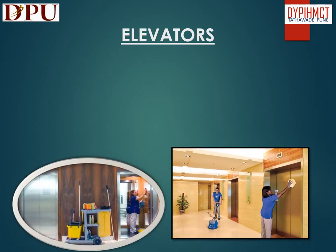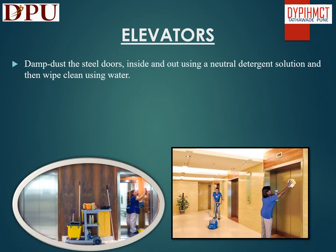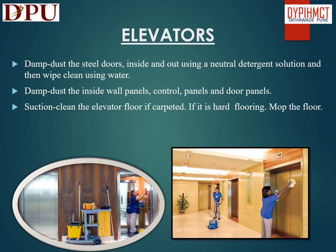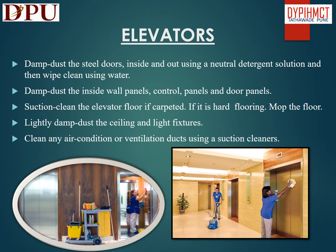In this slide we will discuss about cleaning of elevators. Damp dust the steel doors inside and out using a neutral detergent solution and then wipe clean using water. Damp dust the inside wall panels, control panels, and door panels. Suction clean the elevator floor if carpeted; if it is hard flooring, mop the floors. Lightly damp dust the ceiling and light fixtures. Clean any air conditioning or ventilation ducts using a suction cleaner.